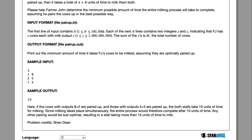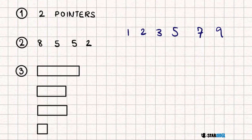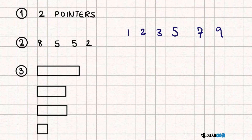Let's go over the algorithm for this question. We can solve this using two pointers. If we simplify the question and assume every value only appears once, we'd solve it with a sorted list, starting one pointer at the smallest value and another pointer at the largest value.